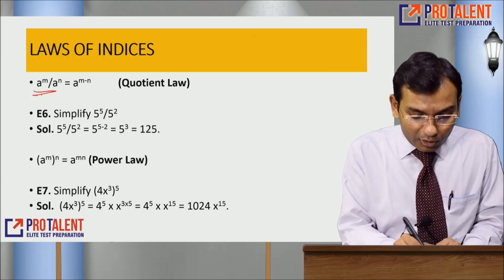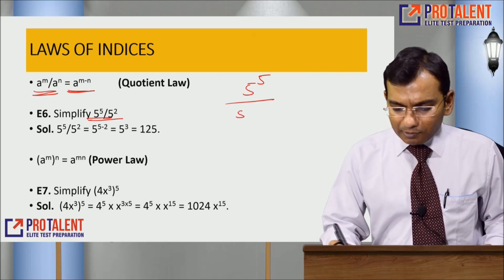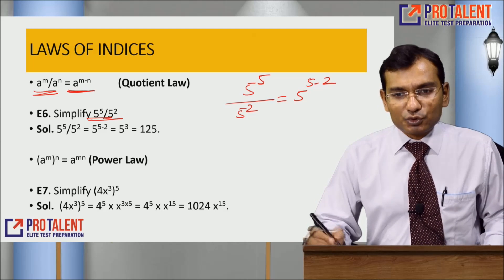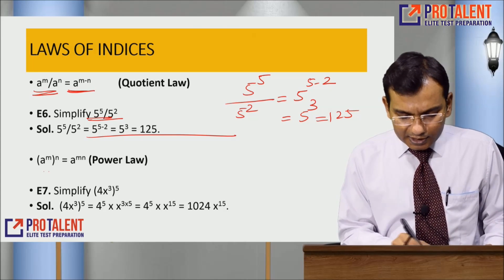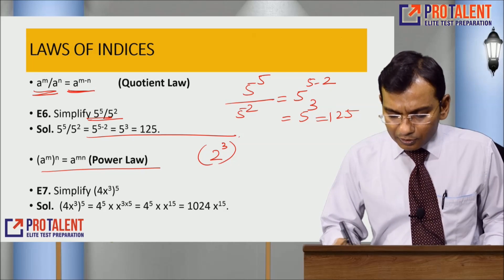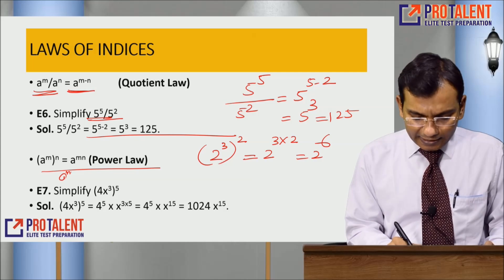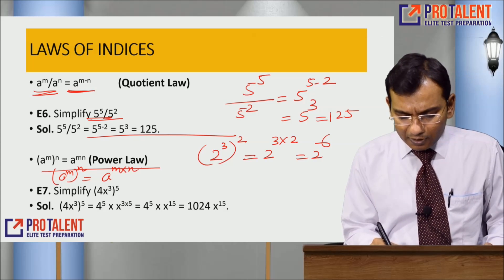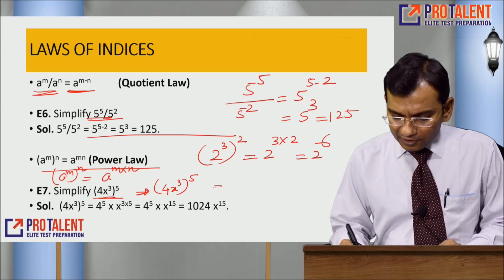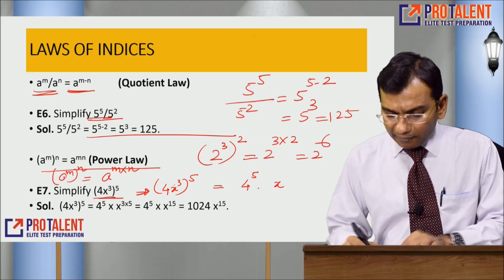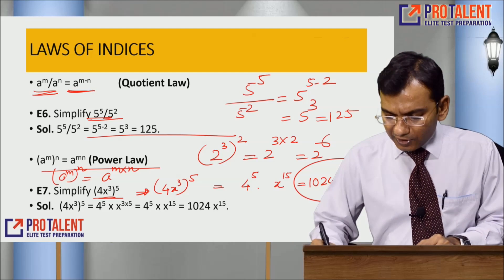Another is the power law: (2 to the power 3) to the power 2 is written as 2 to the power 3 into 2, which is 2 to the power 6. That is, (A to the power M) to the power N equals A to the power M multiplied by N. For example, (4x cubed) to the power 5 is 4 to the power 5 into x to the power 15, which equals 1024 x to the power 15. There is also the law: A to the power minus M equals 1 upon A to the power M. So 2 to the power minus 3 is 1 upon 2 cubed, which is 1 upon 8.